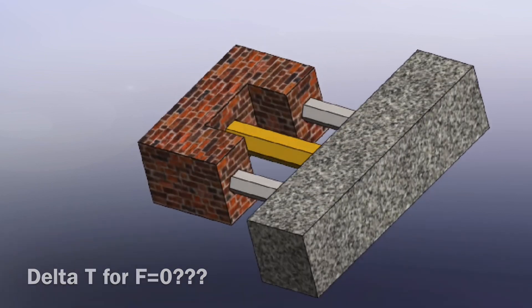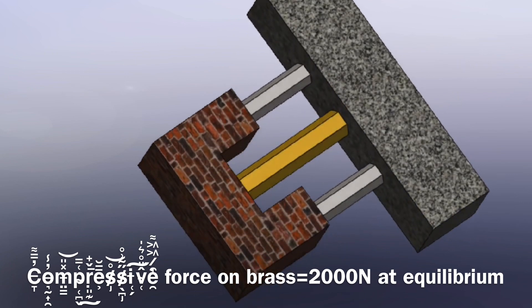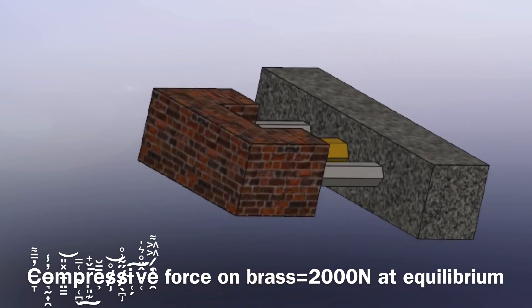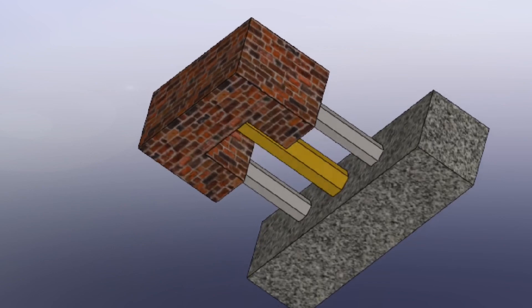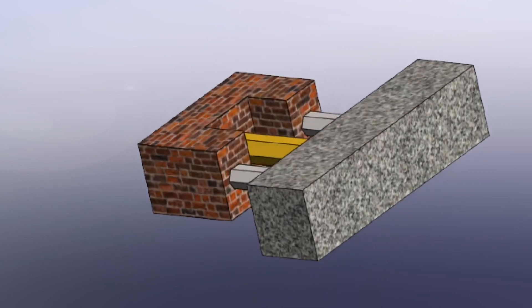The system is currently at thermal equilibrium and the compressive force on the brass rod is equal to 2,000 newtons. As you have undoubtedly memorized the linear expansion coefficients of both brass and steel, go ahead and calculate the change in temperature required to bring the force on the brass rod equal to zero.